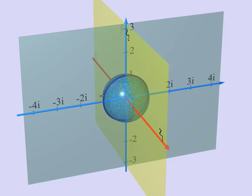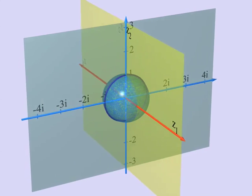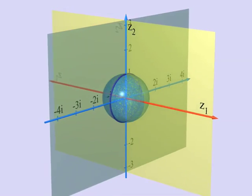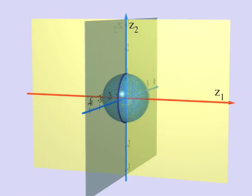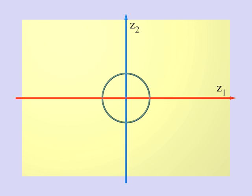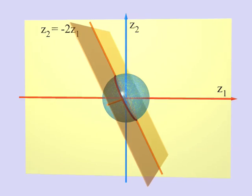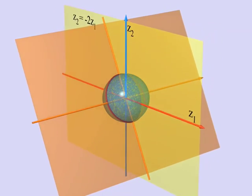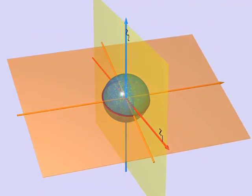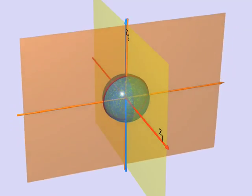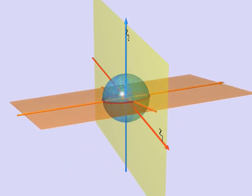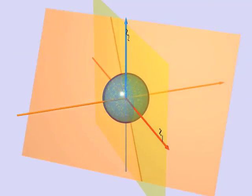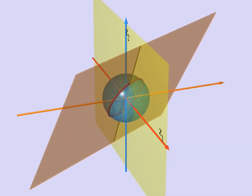Now what is true for the horizontal line and the vertical line is equally true for all lines going through the origin. Here you can see the line with equation z₂ equal to minus 2z₁. But we could do the same with any line, z₂ equal to A times z₁ for any complex number A. In this manner, the three-sphere in four-dimensional space is filled with circles — one for each complex line going through the origin in our plane of complex dimension 2.